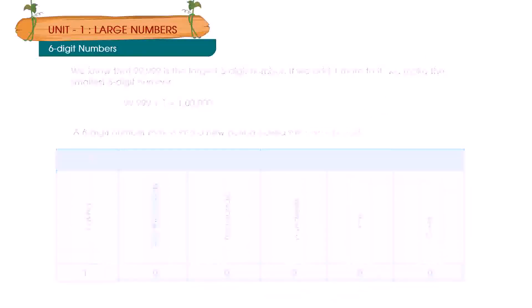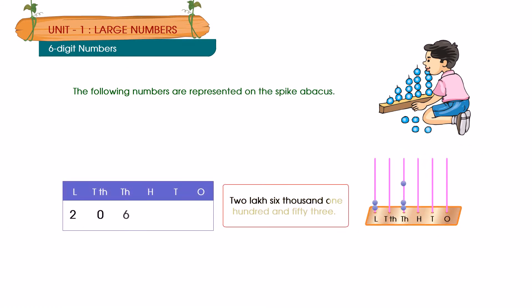The following numbers are represented on the spike abacus: 2,06,153 and 4,32,475.